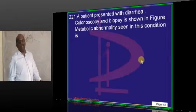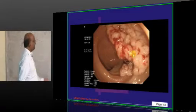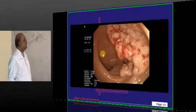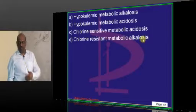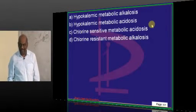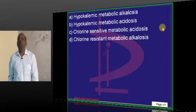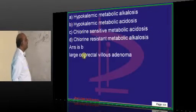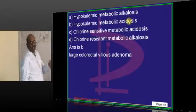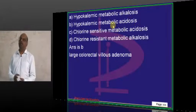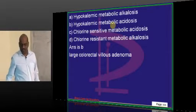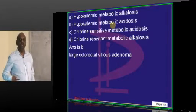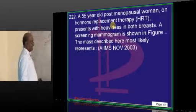Now, a patient present with diarrhea, colonoscopy and biopsy have been shown. Typically colonoscopy is showing villus adenoma. Villus adenoma leads to development of a secretory diarrhea and that makes a person to lose electrolytes. And that typically leads to development of a hypokalemic metabolic acidosis. This is a known electrolytemia and ABG disturbance in a patient with villus adenoma who has got a secretory diarrhea.